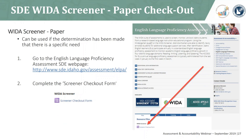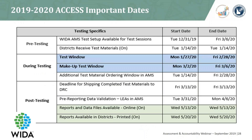If a school team has made the determination to screen using the paper version of the WIDA Screener and your district has fewer than 25 ELs, a request form can be found on the English Language Proficiency Assessment webpage under Files. After the form is completed, materials will be sent out and should be received within a few business days. After test administration, it is the responsibility of the school to send back any and all materials to the Assessment and Accountability Department.